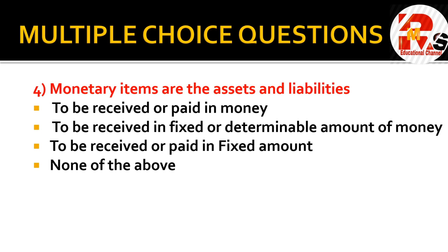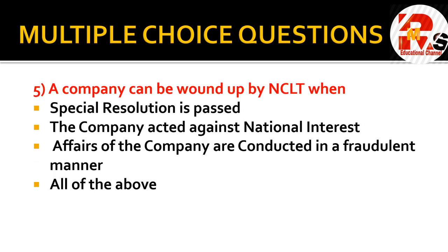This question is from the FEF chapter and is quite important. The options are: amount of money to be received or paid in fixed amount, and none of the above. The correct answer is 'to be received or paid in fixed amount.' Monetary items are related to money — any items you receive in a fixed amount or pay in a fixed amount become monetary items. If exporting, you receive money; if importing, you pay cash. Whatever is received or paid in a fixed amount is your monetary item.